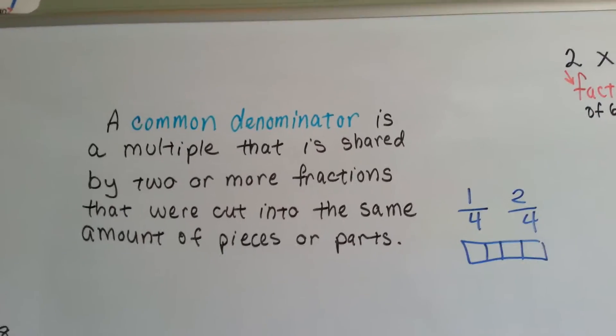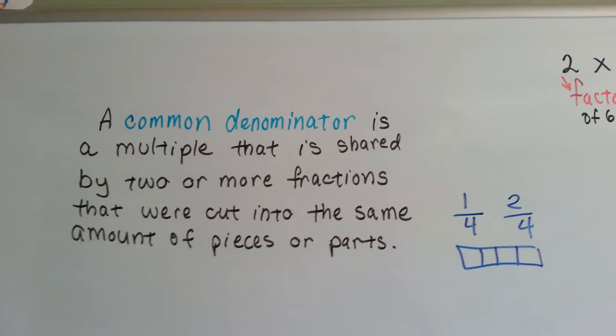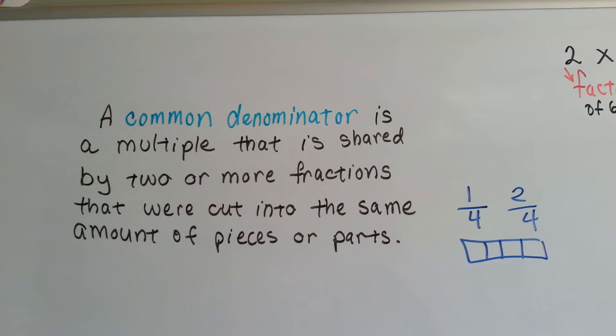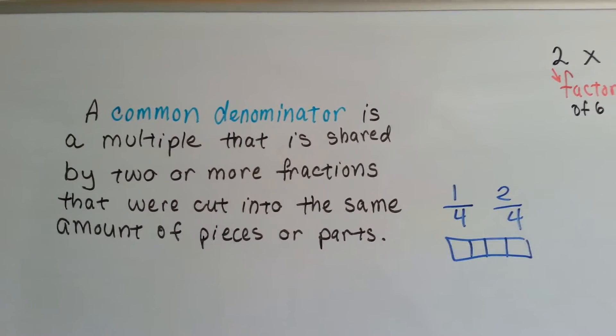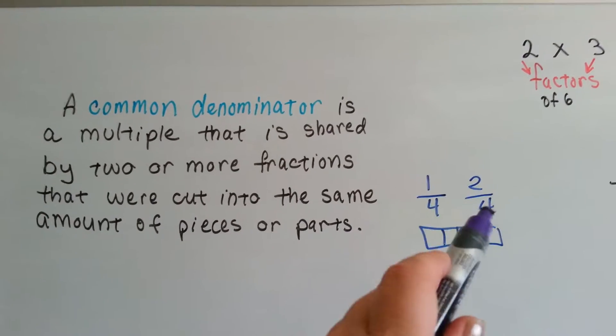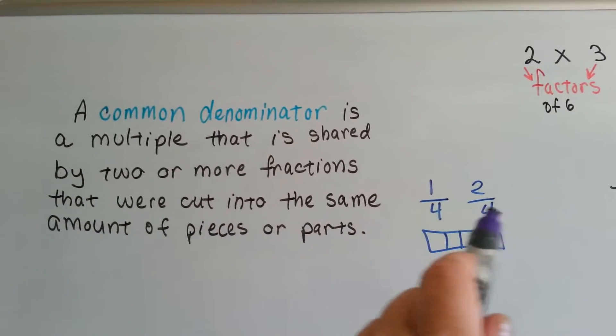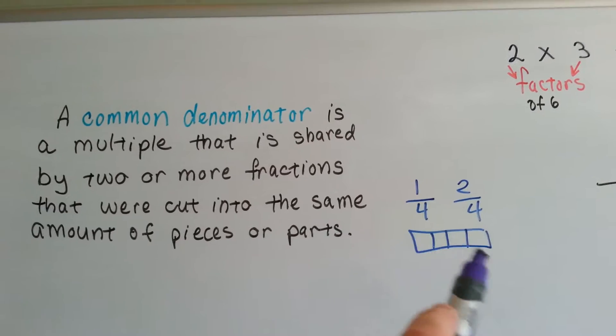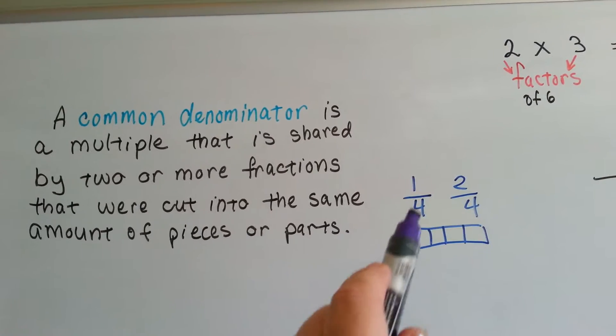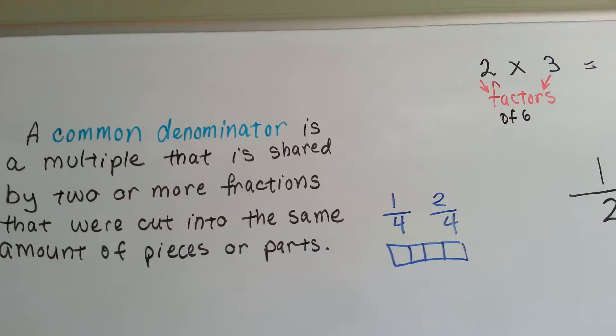So to review, a common denominator is a multiple that is shared by two or more fractions that were cut into the same amount of pieces or parts. So if you see a four that is a common denominator for two fractions, they're representing something that was split into four parts. This is one of the four, and that's two of the four.